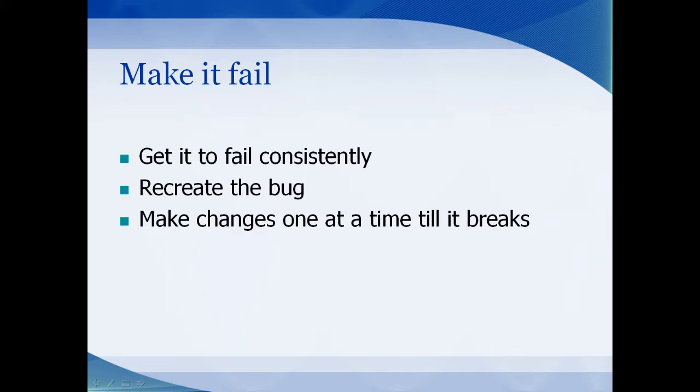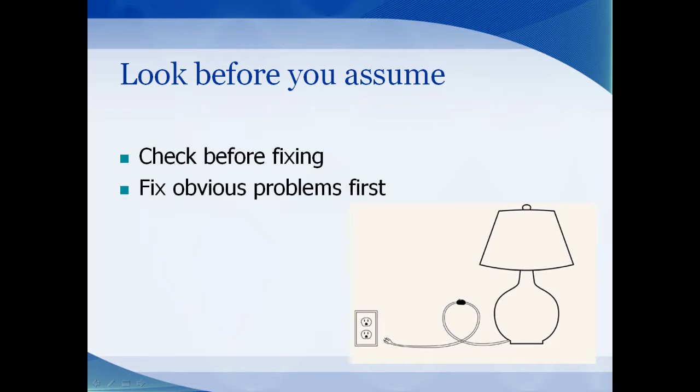If you can recreate the bug, you can narrow down the source of the error. When you make your project fail, make sure that you make changes one at a time. Otherwise you might fix the error and end up with a broken program. Make sure you look at the code that you're fixing and make sure it's really broken. Maybe it might just be something simple—it's like check the plug rather than changing the light bulb.